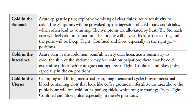For cold in the intestines, there is acute pain in the abdomen, painful watery diarrhea, acute sensitivity to cold; the skin of the abdomen may feel cold on palpation. There may be cold extremities with thick white tongue coating, deep, tight, confined, and slow pulse, especially in the chi positions. For cold in the uterus, there will be cramping and biting menstrual pain, long menstrual cycle, brown menstrual blood containing clots that look like coffee grounds. Infertility. The area above the pubic bone will feel cold on palpation, thick white tongue coating, deep, tight, confined, and slow pulse, especially in the chi positions.